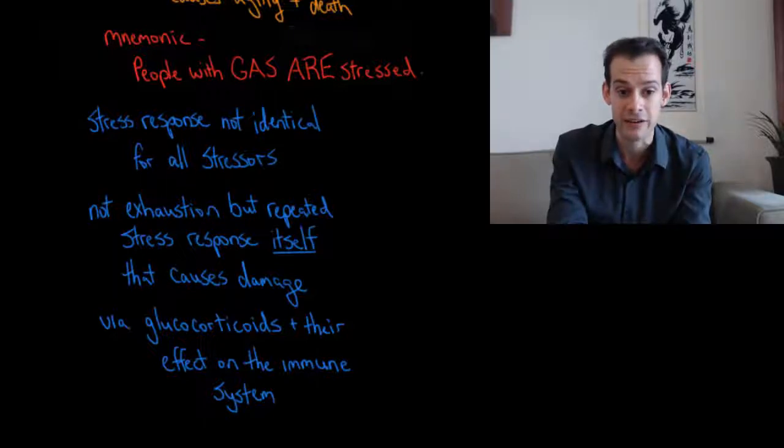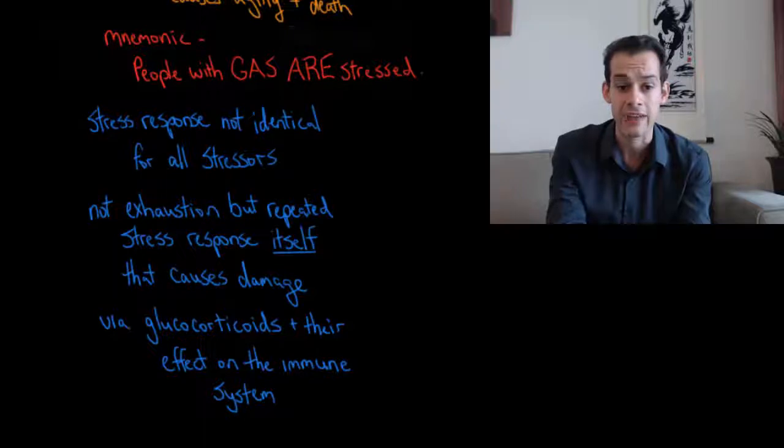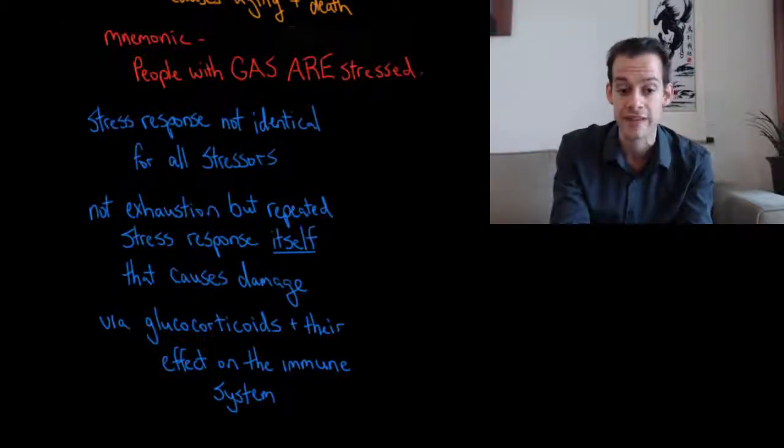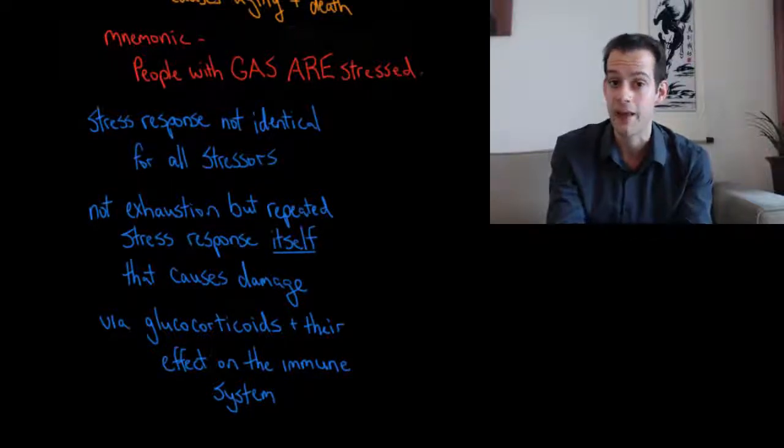And this brings us back to the idea of glucocorticoids that I mentioned in a previous video. And this is one of the main pathways for how this damage to the body occurs from the stress response. It's via these glucocorticoids and their effects on the body and particularly their effects on the immune system. And that's what we'll look at in the next video. I hope you found this helpful.